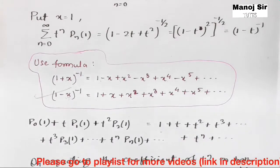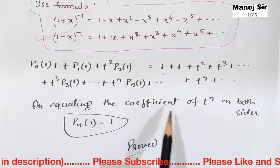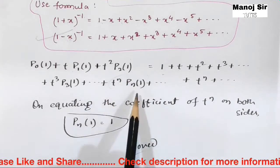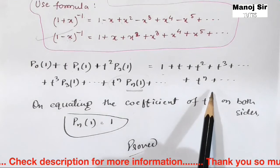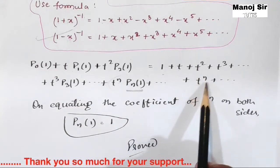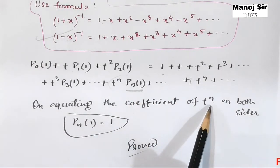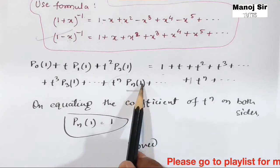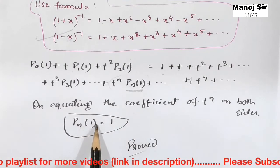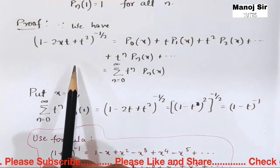Now we equate the coefficients of T^n on both sides. On the left-hand side the coefficient of T^n is P_n(1), and on the right-hand side the coefficient of T^n is 1. Therefore, equating both sides gives P_n(1) = 1.